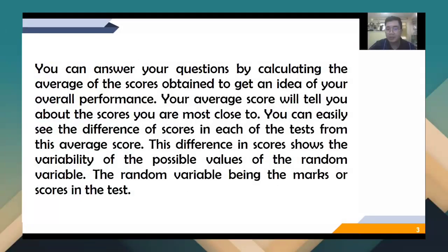You can answer your questions by calculating the average of the scores obtained to get an idea of your overall performance. So like, for example, how you fare in the first grading, in your second grading, we can easily determine that by getting, of course, your average. Your average score will tell you about the scores that are most close to. And you can easily see the difference in scores in each of the tests from this average score. For example, your average rate is, say, 90. What is your lowest score? What is your highest score? How far is your lowest score from your average, which is 90? How far is your highest score from your average of 90?